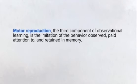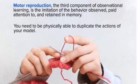Motor reproduction, the third component of observational learning, is the imitation of the behavior observed, paid attention to, and retained in memory. You need to be physically able to duplicate the actions of your model.